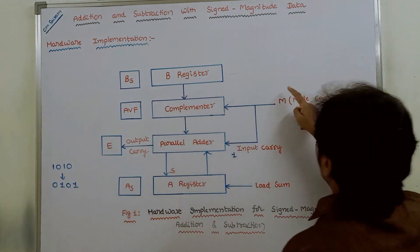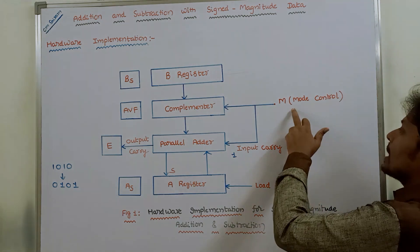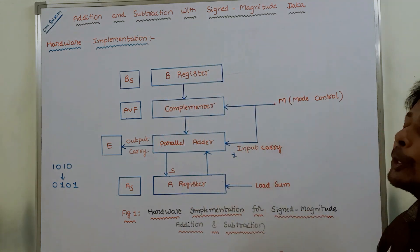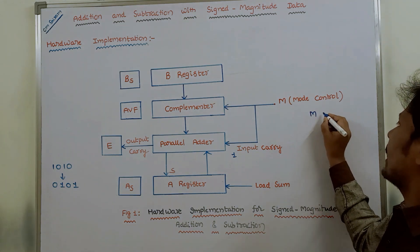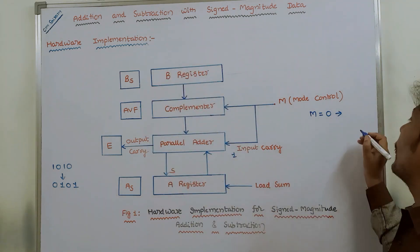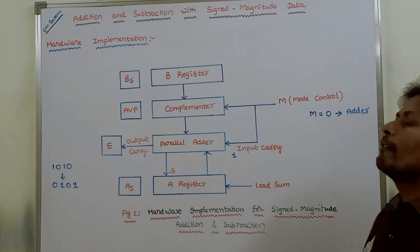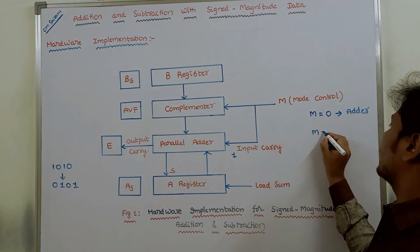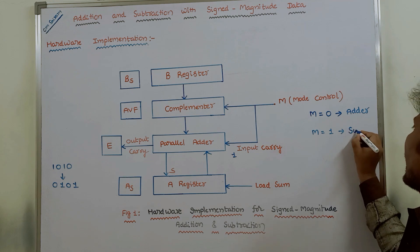M is the mode control bit. By using the mode control bit, this entire circuit controls its operation. When mode control bit M equals 0, the entire circuit can perform only addition and works as an adder. When mode control bit M equals 1, the entire circuit can be formed as a subtractor.